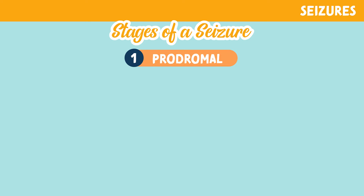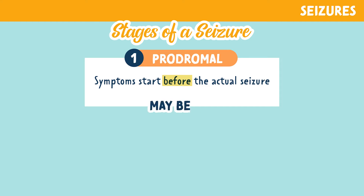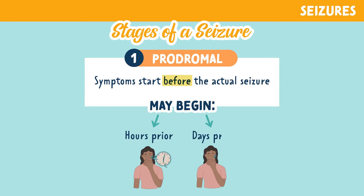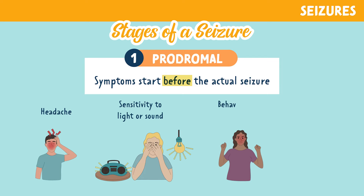The first stage is the prodromal stage. This is where symptoms start before the actual seizure. This may begin hours prior or even days prior to the actual seizure. These symptoms may include a headache, sensitivity to light or sound, behavioral or mood changes, or fatigue.